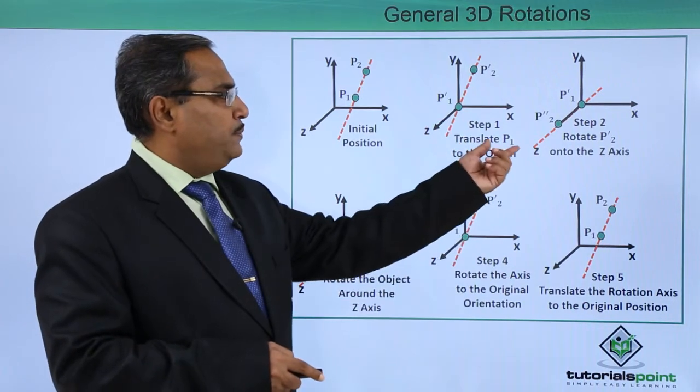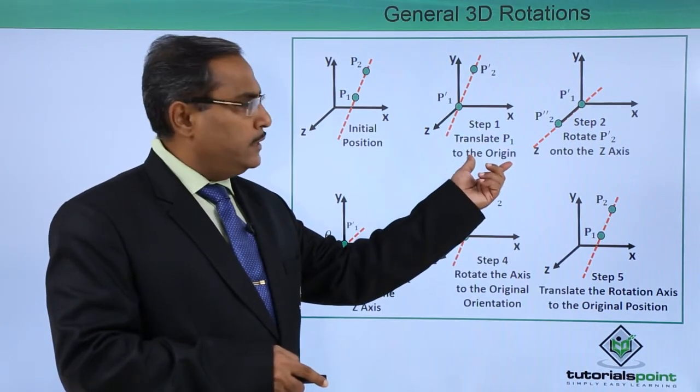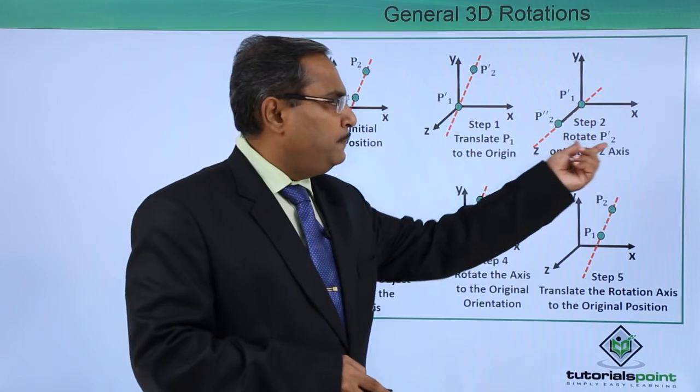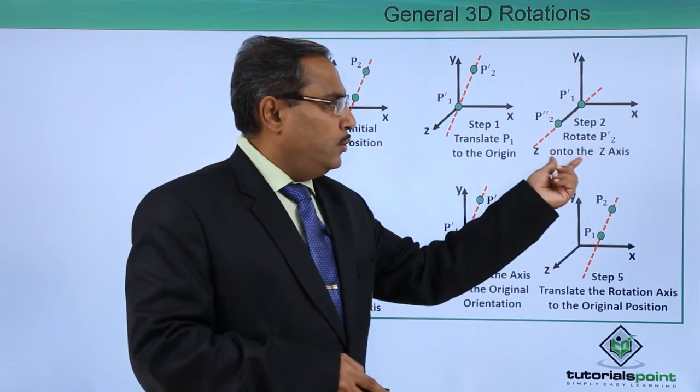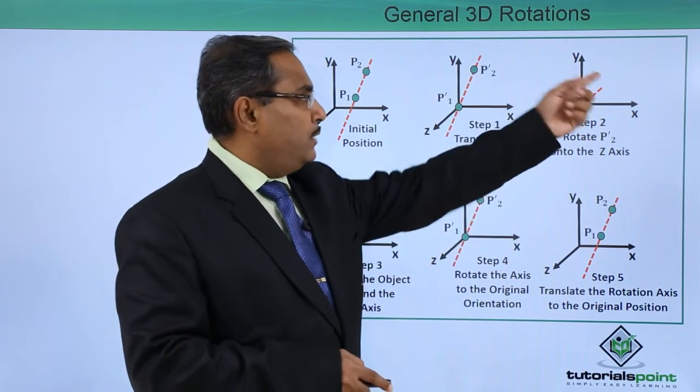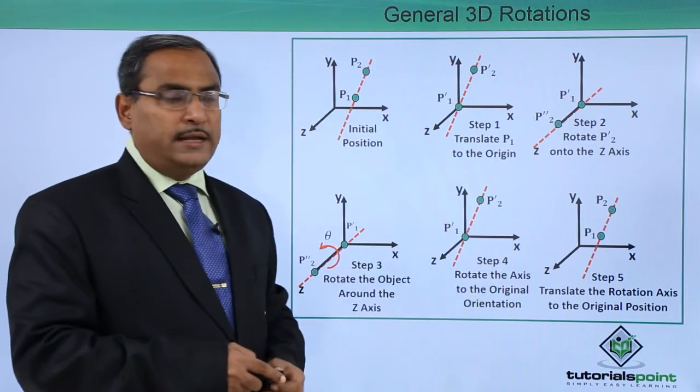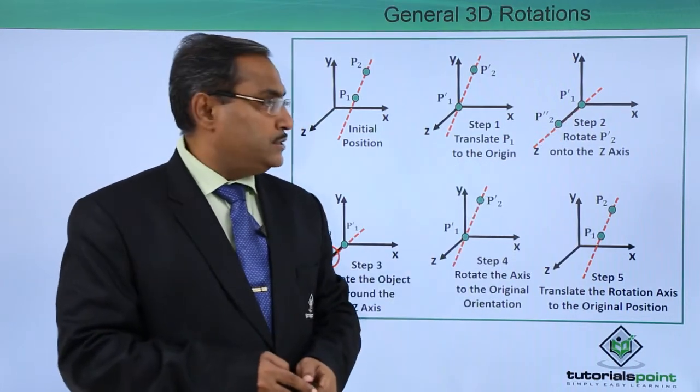Step 1 was translate p1 to the origin we discussed earlier. And step 2 is rotate p2 dash onto the z axis. p2 dash has been rotated onto the z axis and the point has become p2 dash dash.